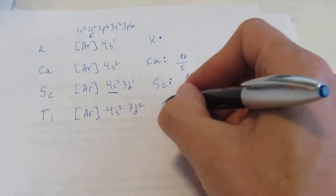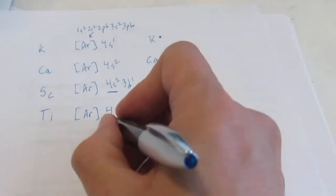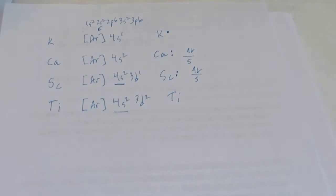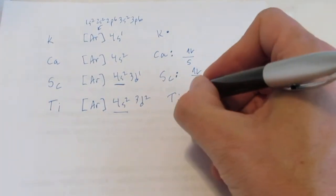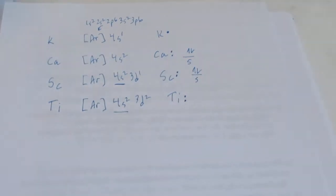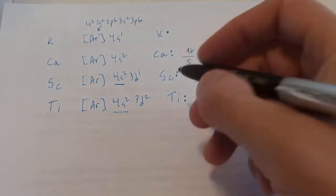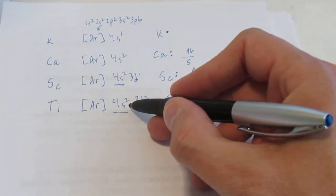What's its dot picture going to look like? Once again, the fourth energy level is the farthest one away. It has a pair of electrons in it. So titanium will have a pair or two dots from those 4S.